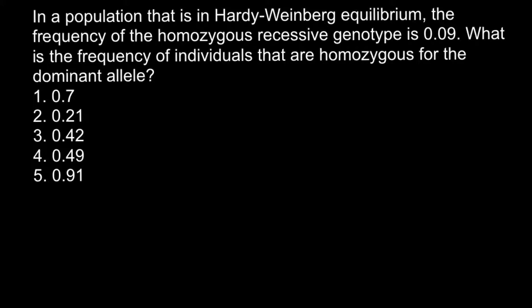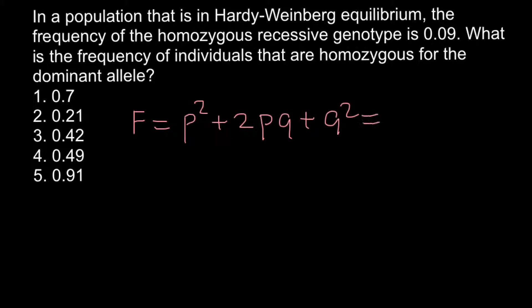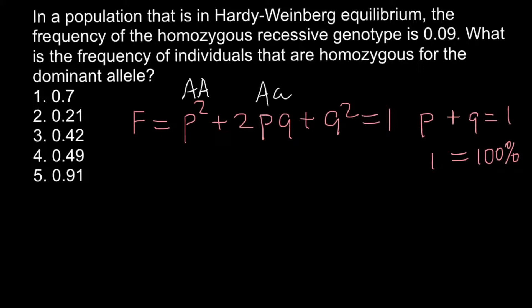In order to solve this problem, we are going to use the Hardy-Weinberg formula. Here is the formula: the frequency of the 3 possible genotypes equals P squared plus 2PQ plus Q squared, and all of this equals 1. All the alleles P plus all the alleles Q also equals 1, which equals 100%.